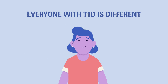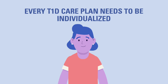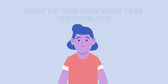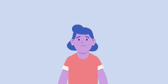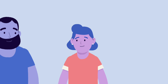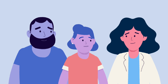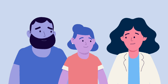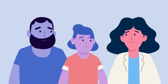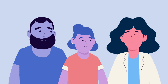Everyone with T1D is different and every child's diabetes care plan will need to be individualized for their life. These are general guidelines that can help steer you on the path, but it is always recommended that you talk with the child's diabetes care team if you feel they need correction doses too often or you're having trouble deciding when to give them. The diabetes care team will work with the child's caregivers to determine a care routine that involves as few correction doses as possible, but it is best to be prepared on how to give them when necessary.